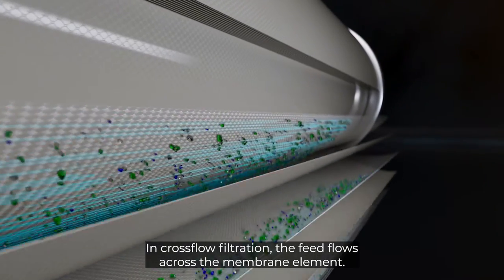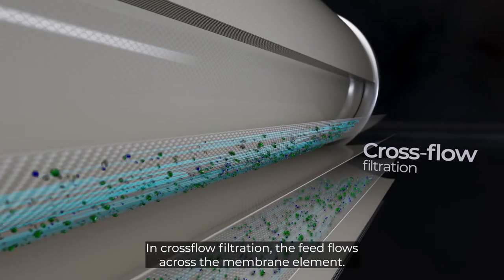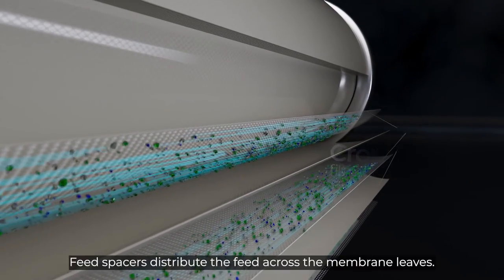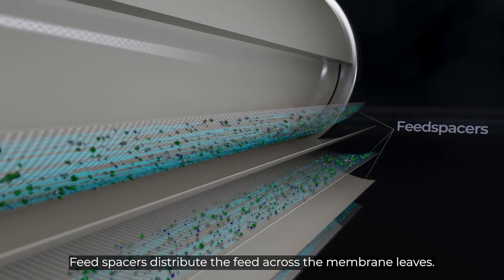In cross-flow filtration, the feed flows across the membrane element. Feed spacers distribute the feed across the membrane leaves.